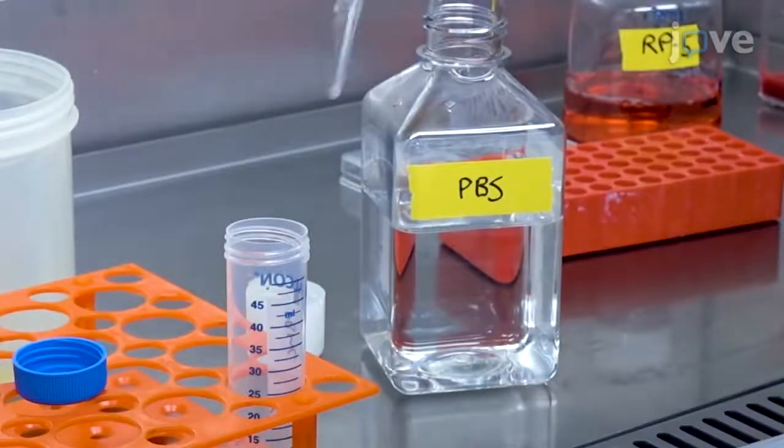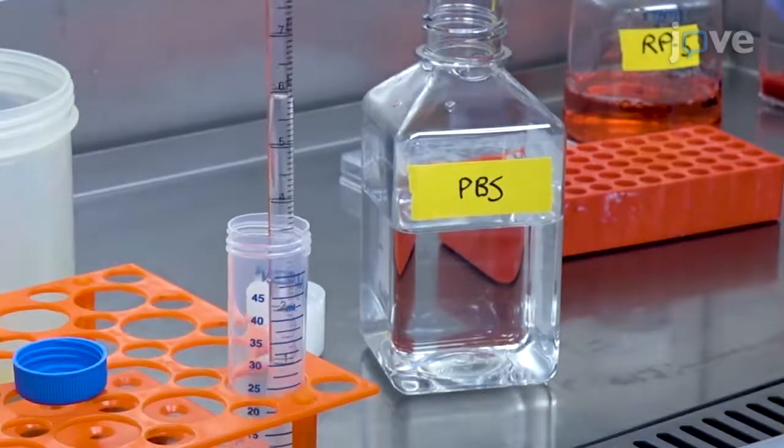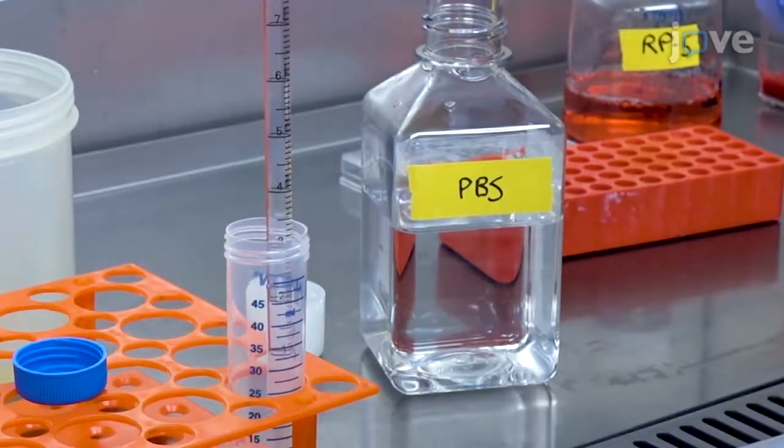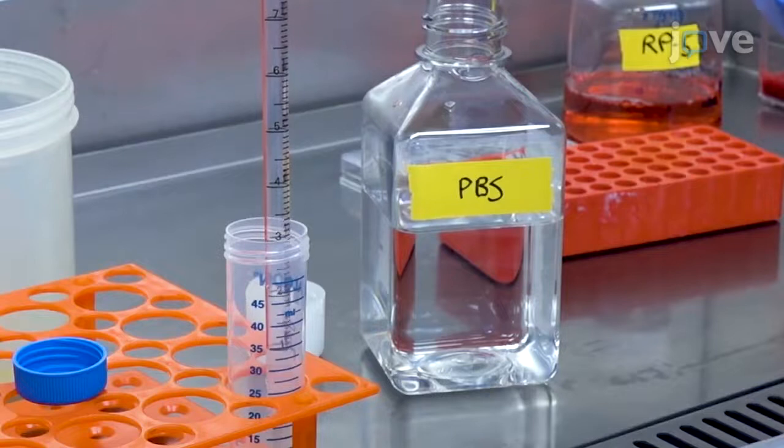After counting, dilute the cells to a 1 times 10 to the 6 peripheral blood mononuclear cells or PBMC per mL of PBS concentration.